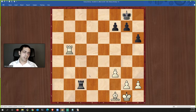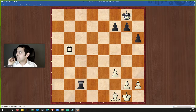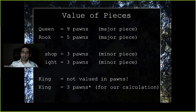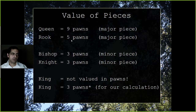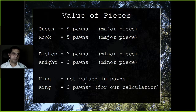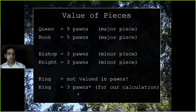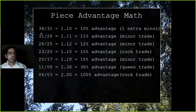The computer decided to take my dangerous passed pawn and give me his queen — I was really happy. I grabbed the pawn and, thanks to this bishop, grabbed another one too. Now let me show you the relative value of pieces: the queen is worth 9 pawns, the rook is worth 5 — those are the major pieces. Bishops and knights are each worth about 3 pawns — the minor pieces. The king I'll value at 3 for calculation purposes.